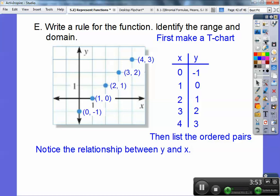And then what you want to do is look at the relationship between x and y. Can you see that y is 1 less than x right here? How about this one? Is 0, 1 less than 1? Yeah. Is 1, 1 less than 2? Yes. 2 is 1 less than 3, and 3 is 1 less than 4. So it's always 1 less than that. So your rule is y equals x minus 1.